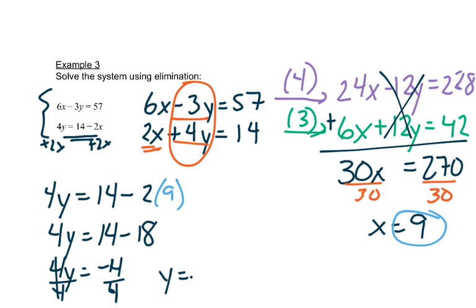Divide both sides by 4. And I get y is equal to negative 1. So we'll write that as our point. x first. 9 comma negative 1.